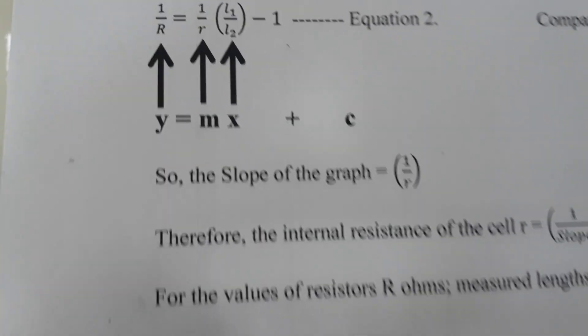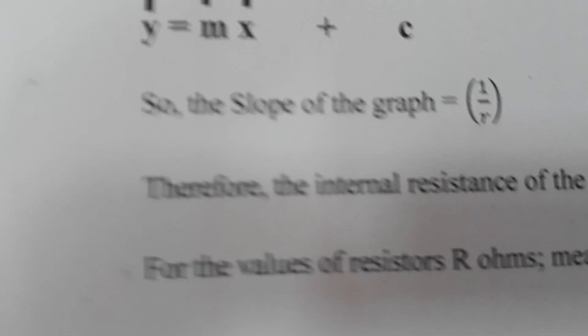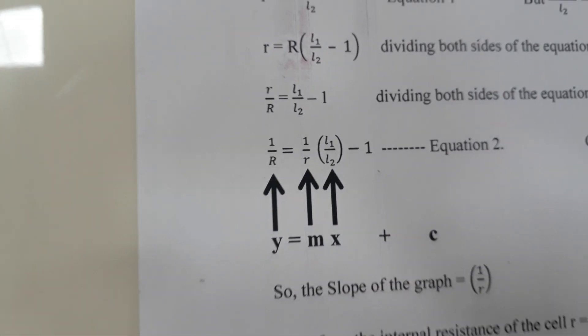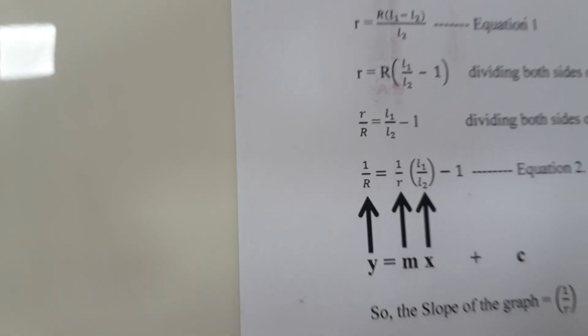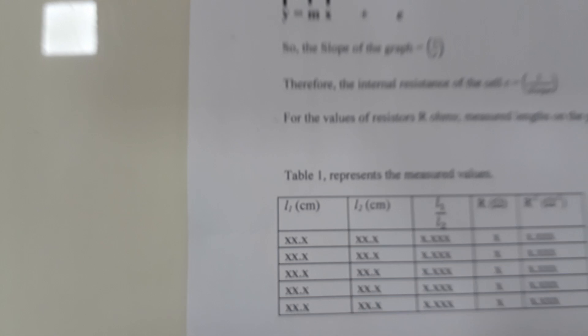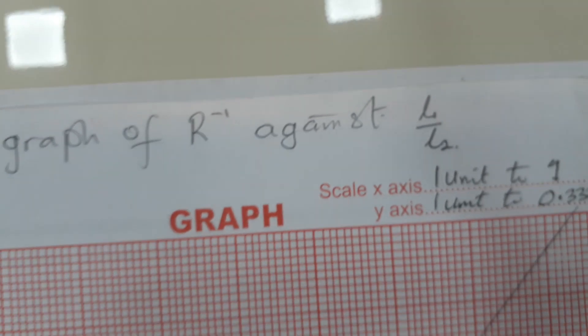Now, you can see that what we have on the y-axis will be one over R, big R, while what we have on the x-axis will be L1 over L2. We will now go ahead and plot 1 over R on the y-axis, and then our L1 over L2 on the x-axis.